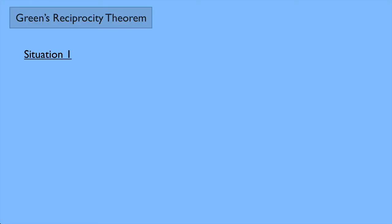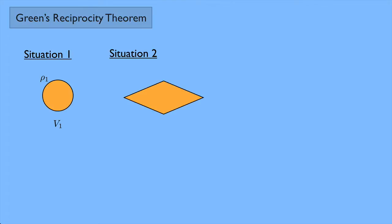Consider the following situation — I'll call it situation 1 — where we have a sphere full of charge with a charge distribution ρ1 that creates a potential V1. Then suppose we have a completely different situation, situation 2, which is a little square plane of charge with charge distribution ρ2 that creates a potential V2. These situations are completely separate from each other; they're not near each other at all.